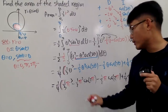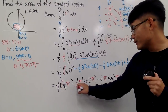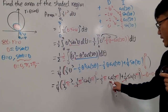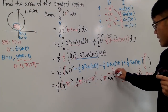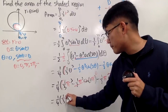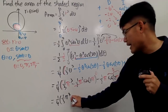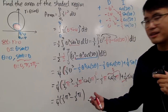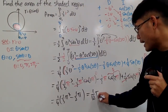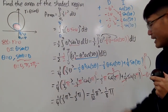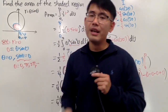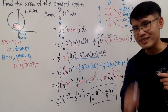Distributing the 1/4, we get the final answer: 1/12 times pi to the third power, minus 1/8 times pi. This is the area of the first (inner) loop. Hopefully you guys liked this video — if so, please give it a like. Thank you so much, as always, that's it.